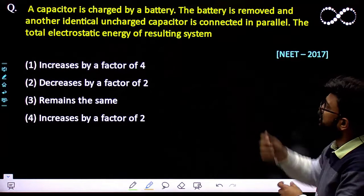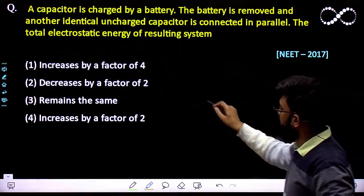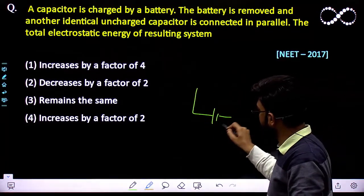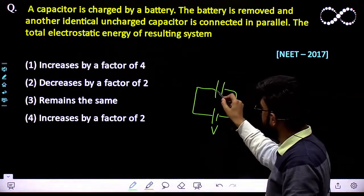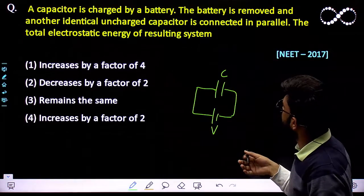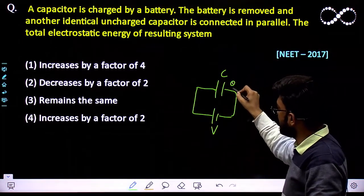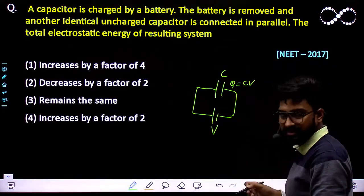First question says: a capacitor is charged by a battery. So let the battery be V volts and it has charged a capacitor. Its capacitance is C. So the charge acquired must be Q = CV.